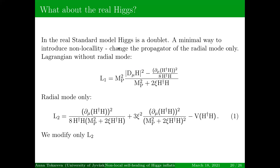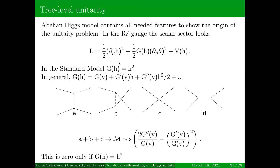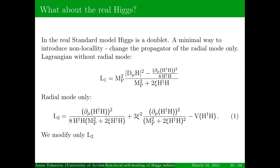The idea is that we spoil just the radial mode of the Higgs, so we change only the propagator of the radial mode. In the covariant form, the radial mode Lagrangian is written in a specific way, and we modify only the radial mode part, not the Goldstone modes. The potential doesn't depend on the Goldstones because they are flat directions.